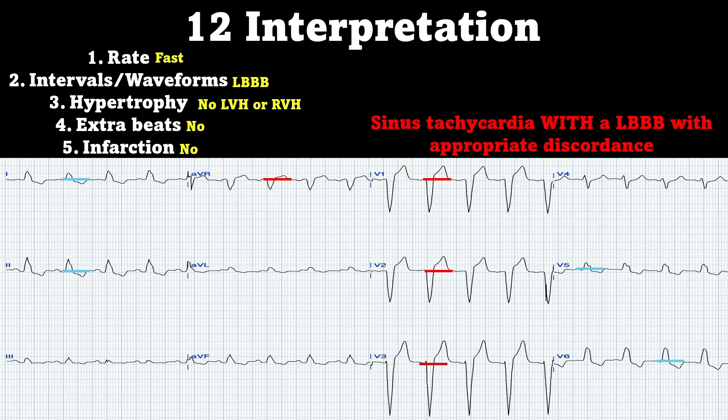When you're looking for excessive discordance, you can start looking at the Barcelona criteria or Smith-Scarbosa criteria to determine if you're actually having an infarction in a patient with a left bundle branch block. So this is going to be our sinus tachycardia with a left bundle branch block with appropriate discordance.